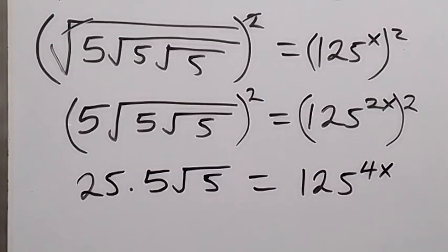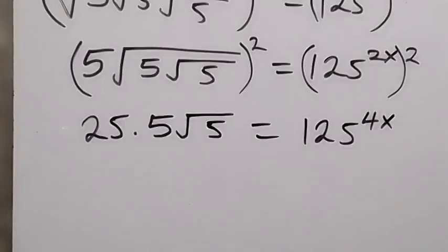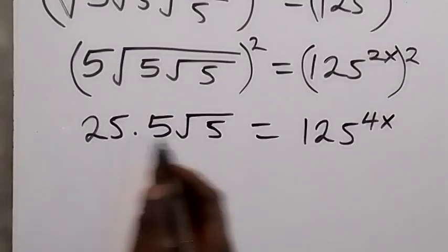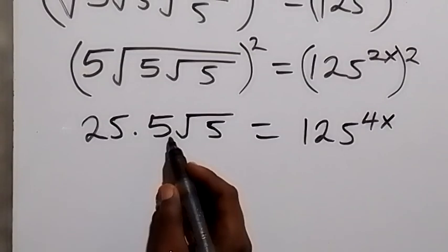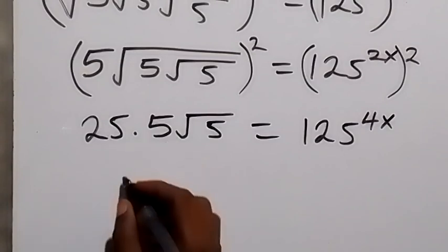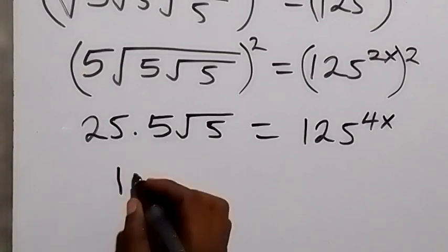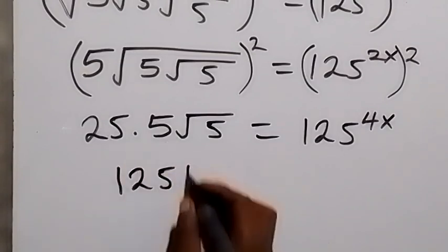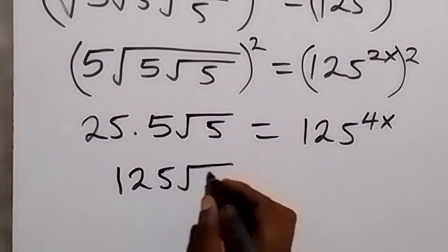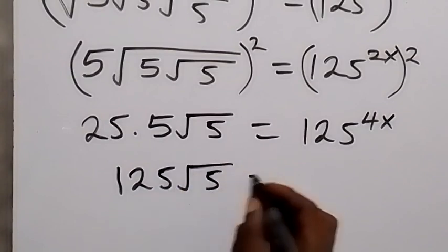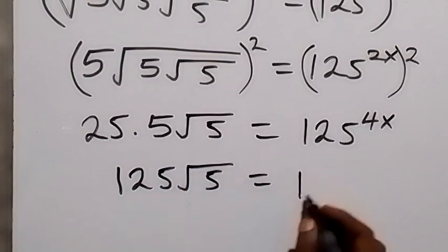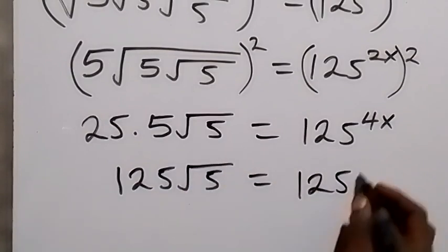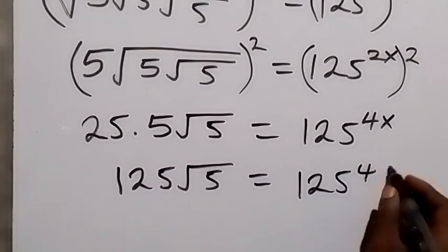In the next step we multiply 25 times 5, which gives us 125. So we have 125 root 5 equals to 125 raised to power 4x.